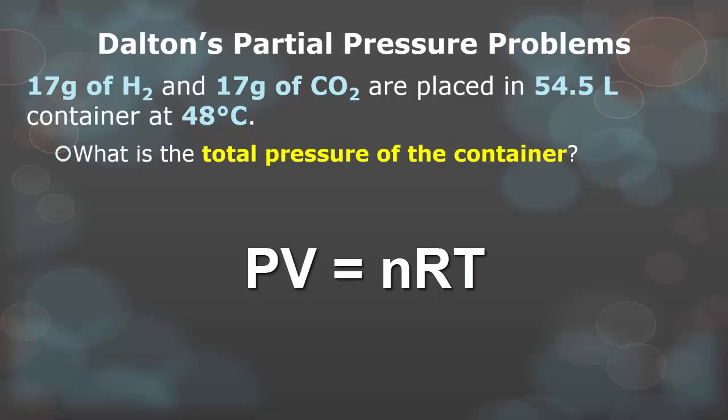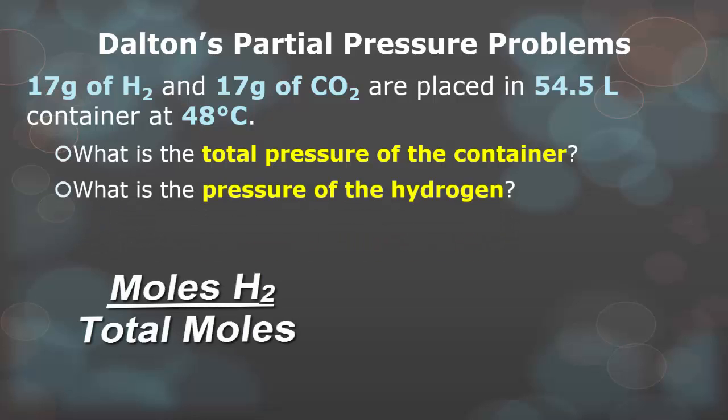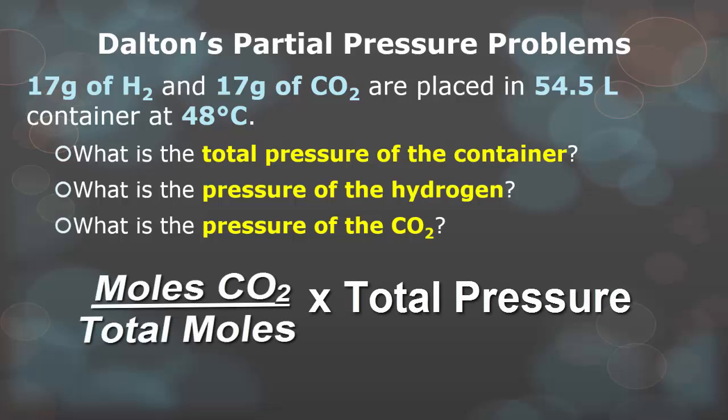Now plug in all your variables into the ideal gas law. P is going to be the X value. You don't know what it is. The volume is going to be 54.5. You're going to set those equal to the total number of moles of hydrogen and carbon dioxide multiplied by the ideal gas law constant and then multiply it by the temperature in Kelvin. So again, that is Celsius plus 273. And finally, when you get your answer, that is the total pressure of the container. Now, if you know the total pressure of the container after you did the ideal gas law problem, you can go back and figure out what is the pressure of just hydrogen. It's the moles of hydrogen over the total times the pressure you just calculated, and that will tell you what pressure is going to be for hydrogen. You can also do the same thing for carbon dioxide, or you could just subtract the pressure of hydrogen from the total pressure of the container.